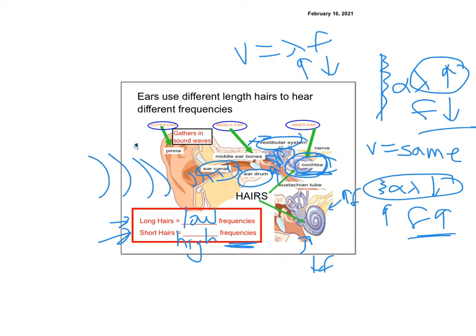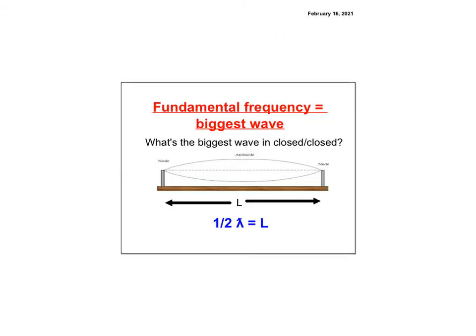As you get older, those hairs get damaged and they're not replaceable — you can't fix them. That's different from hearing really loud sounds, which mess with your eardrum. If the eardrum is torn it doesn't always repair, and then you can't hear as well because it can't vibrate as well. The hair cells have to do with which frequencies you can hear.